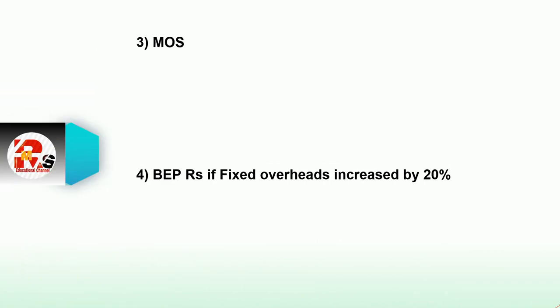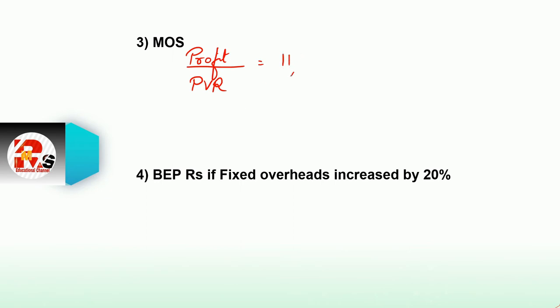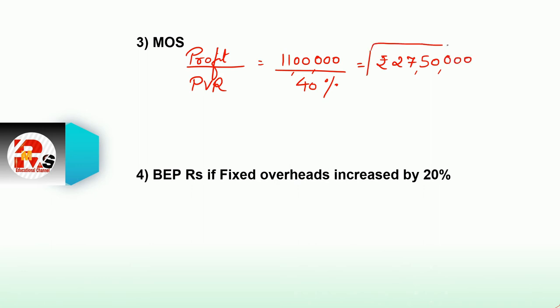Next point: MOS. The shortcut formula for MOS is profit divided by PVR. Profit we have already calculated as Rs. 11,00,000. Substituting: MOS = 11,00,000 ÷ 40% = Rs. 27,50,000. That is the answer for MOS. Next point: BEP in rupees if fixed cost is increased by 20%.